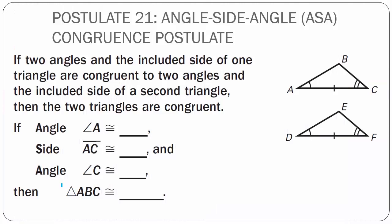Postulate 21: Angle-Side-Angle, ASA Congruence Postulate. If two angles and the included side of one triangle are congruent to two angles and the included side of a second triangle, then the two triangles are congruent. Think of this as a side sandwich, which is different from the angle sandwich we learned in the last chapter — Side-Angle-Side or SAS. In this postulate, angle A is congruent to angle D because both have one arc.